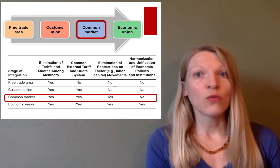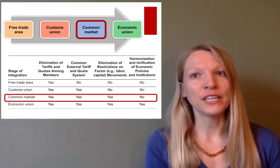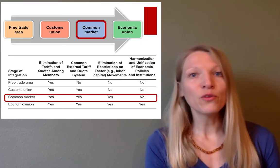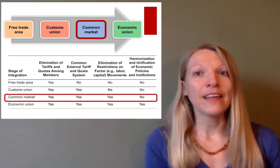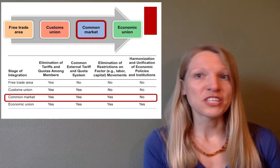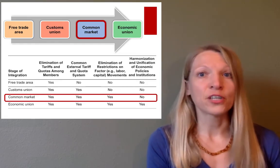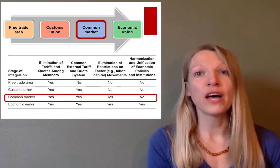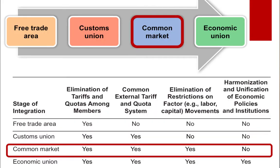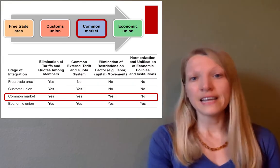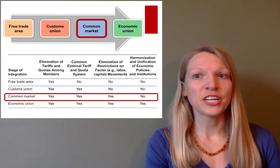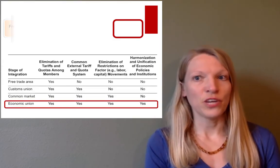The next big stage of regional integration is the common market. It is formed when members of a customs union remove barriers that allow factors such as capital or labor to freely move across borders. People do not need visas to travel from one country to another in a common market, whether traveling for pleasure or work.